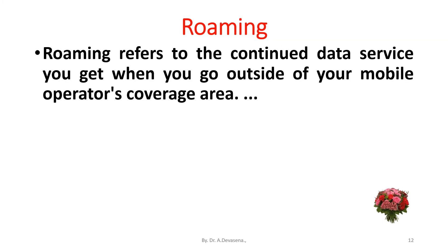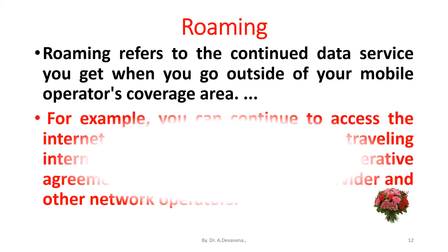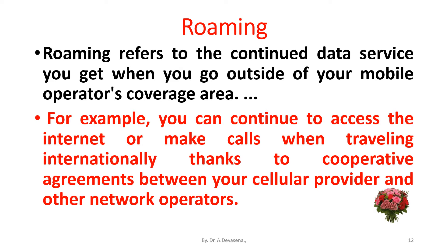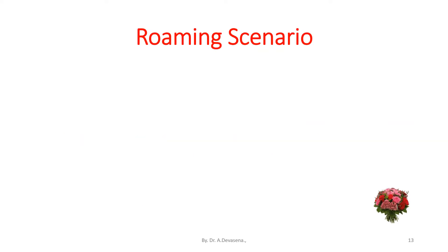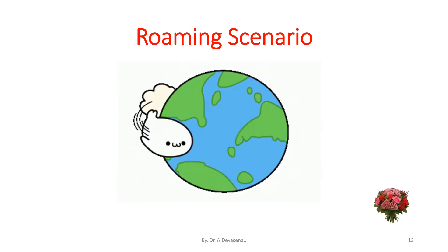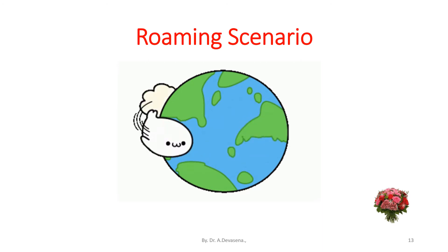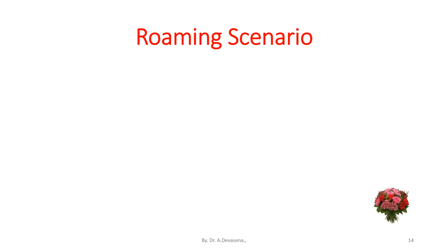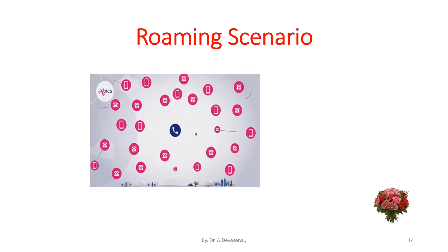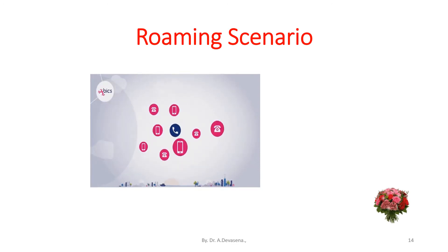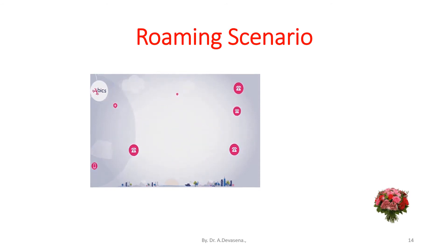Roaming refers to the continued data service you get when you go outside of your mobile operator's coverage area. For example, you can continue to access the internet or make calls when traveling internationally, thanks to cooperative agreements between your cellular provider and other network operators. With the help of these latest technologies, it is possible to make or attend a call wherever we are available — throughout the world. This is indicated in the roaming scenario representations.